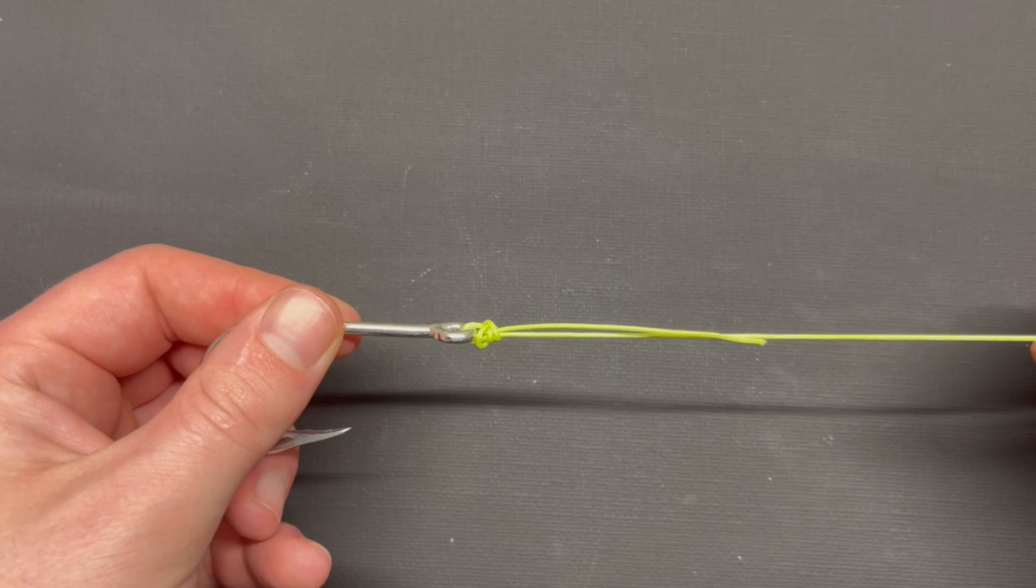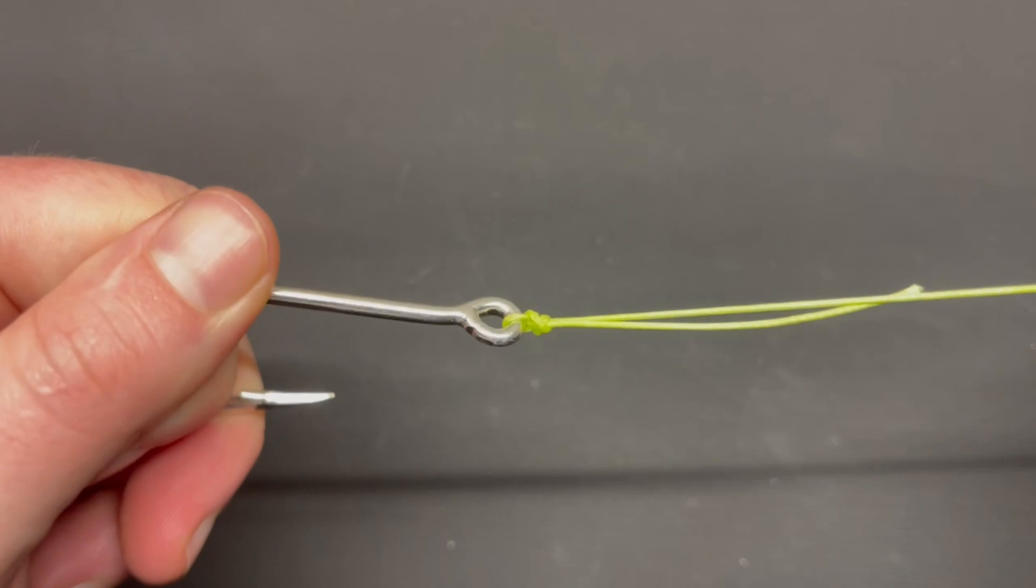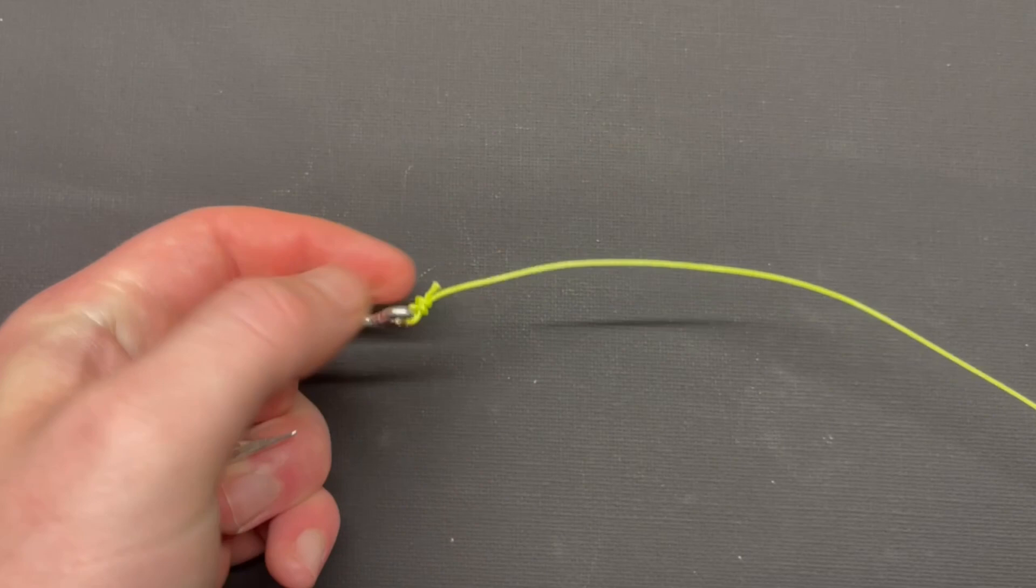Final step, as always, is to trim your tag end. Don't trim all the way down to the knot because if a big fish comes and pulls hard enough, it can pull that tag end down through your knot, your knot will come undone. You'll lose the knot and lose the fish.